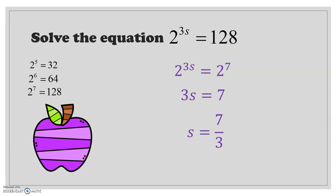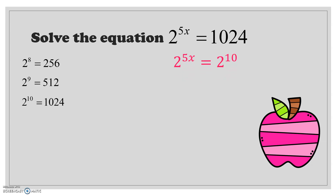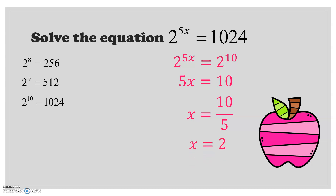Let's look at one final question: 2 to the power of 5x is equal to 1024. I need to identify 1024 as a power of 2. My first guess of 2 to the power of 8 wasn't correct, so I kept going — 2 to the power of 10 is exactly 1024. So I rewrite it as 2 to the power of 5x is equal to 2 to the power of 10. Setting the exponents equal: 5x is equal to 10. Solving this simple one-step equation gives x is equal to 10 over 5, so x is equal to 2.